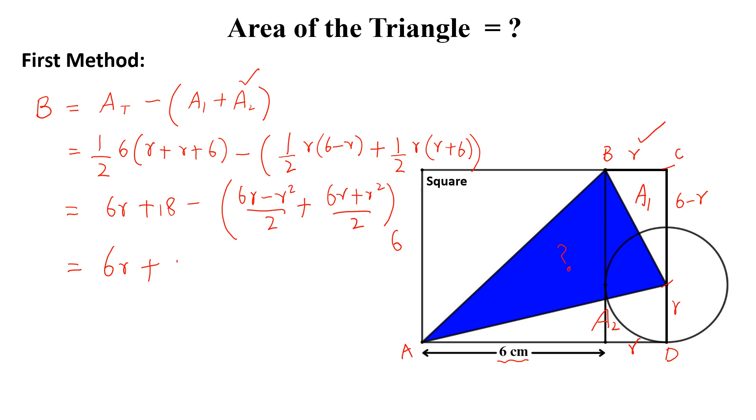We will simplify more, we will get 6r plus 18 minus 12r divided by 2, which is equal to 6r. So minus 6r plus 6r are cancelled and the required blue area is equal to 18 centimeter square.